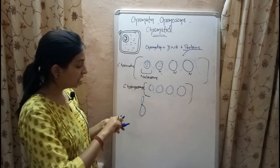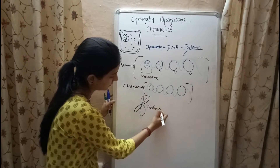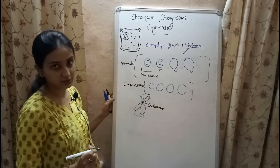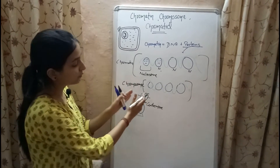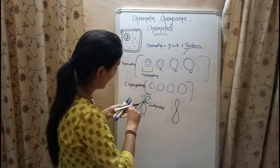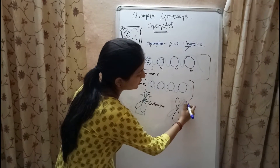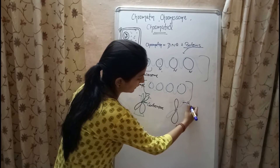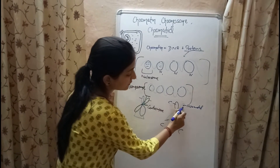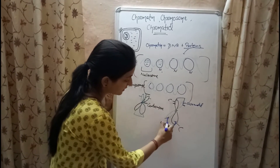After replication of DNA, a copy of the chromosome gets attached to it at a region called the centromere. One half of an identical strand of a replicated chromosome is known as a chromatid. Since one chromatid is identical to the other chromatid it is paired with, the two are known as sister chromatids.